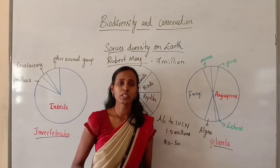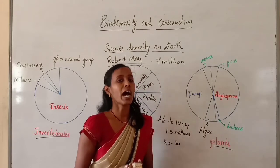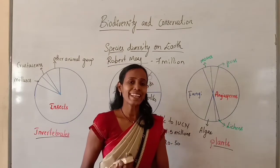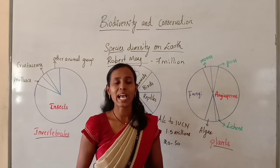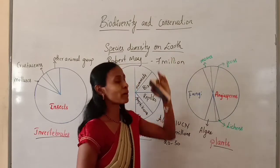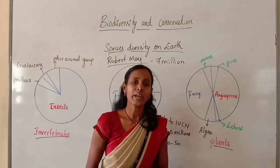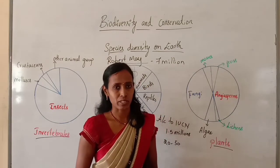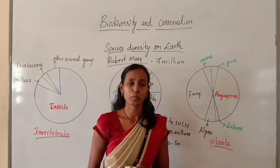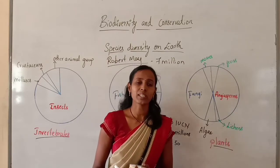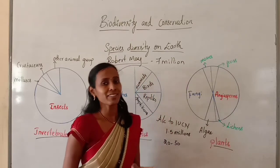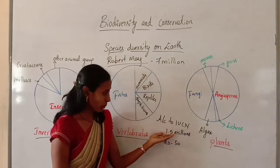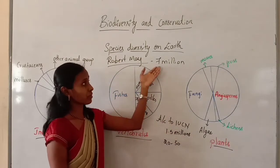Most of the species waiting to be discovered are usually found in the region of the tropics. Now let us discuss some interesting aspects of Earth's biodiversity based on the currently available species inventories.